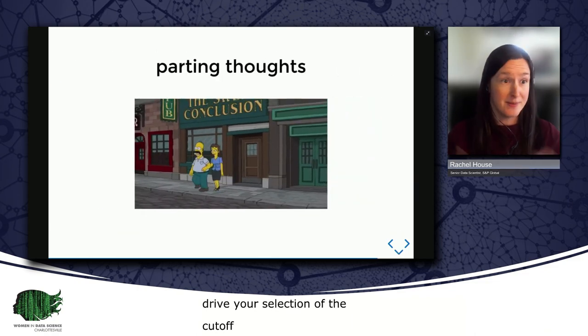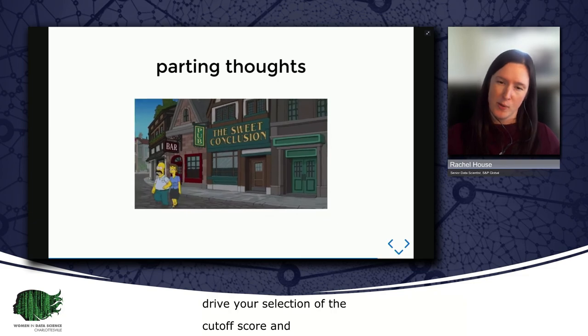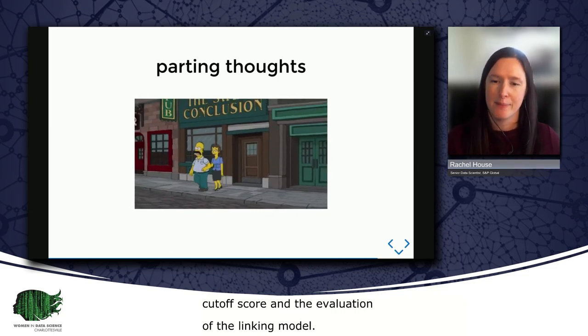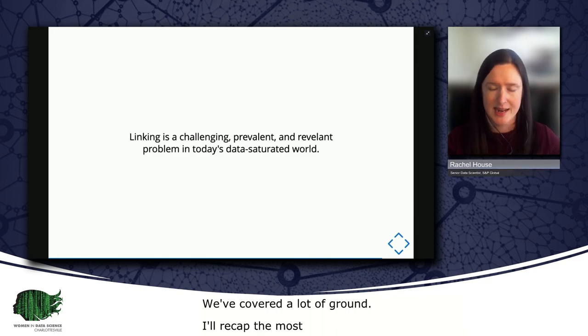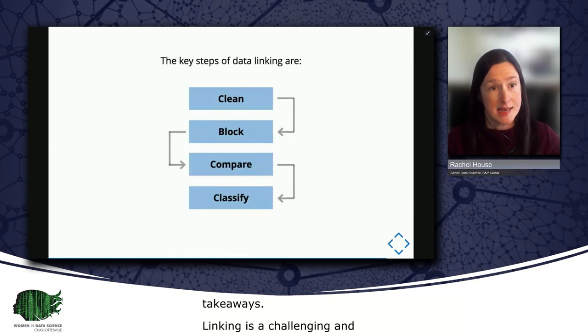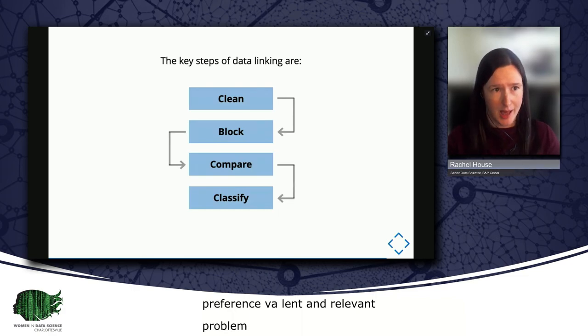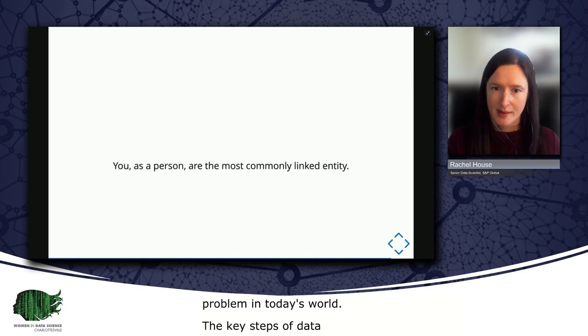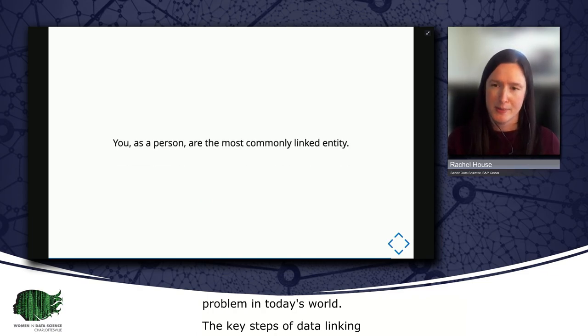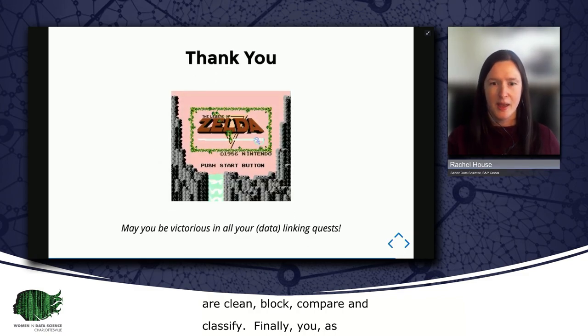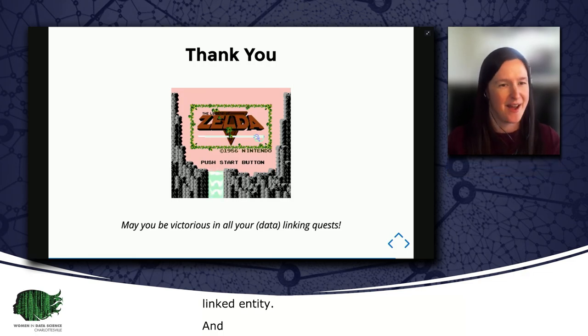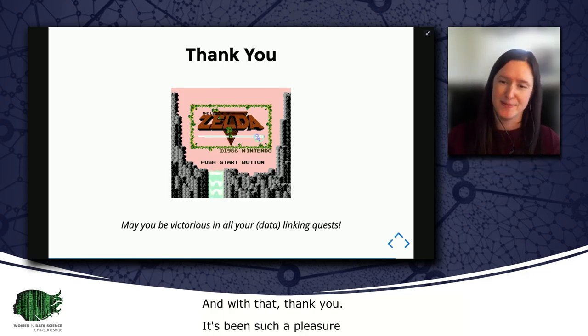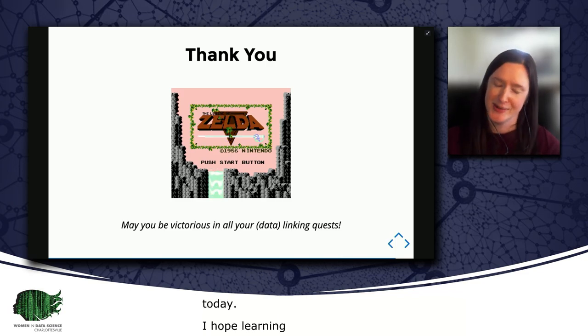Cool. We've made it through the linking process. Congratulations. We've covered a lot of ground today, and so I will recap the most important takeaways. As you've seen, linking is a challenging, prevalent, and relevant problem in today's data-saturated world. The key steps of data linking are clean, block, compare, and classify. And finally, you as a person are the most commonly linked entity. And with that, thank you. It's been such a pleasure speaking at the UVA Women in Data Science Conference today. I hope learning about data linking has been fun and informative, and I wish you all the best of luck in your data linking quests.